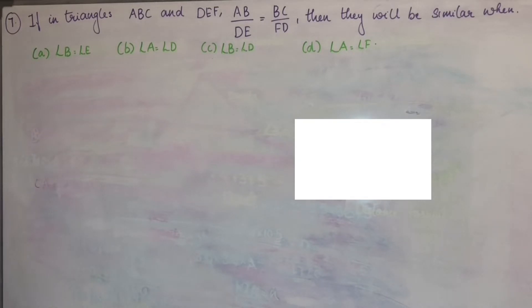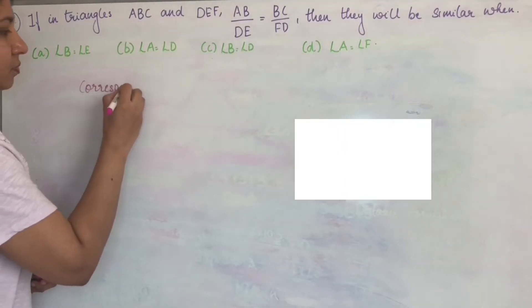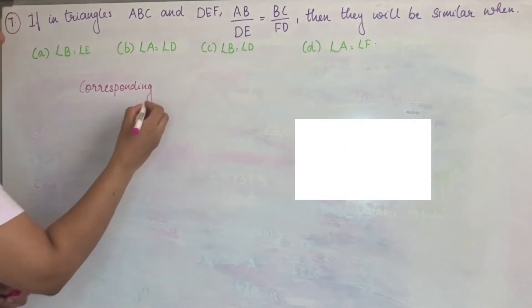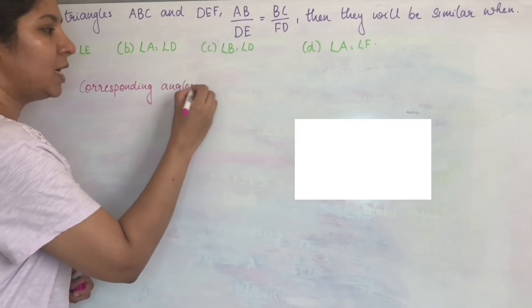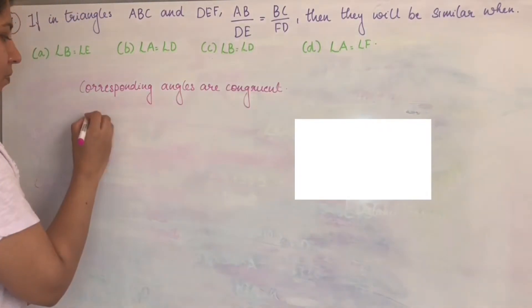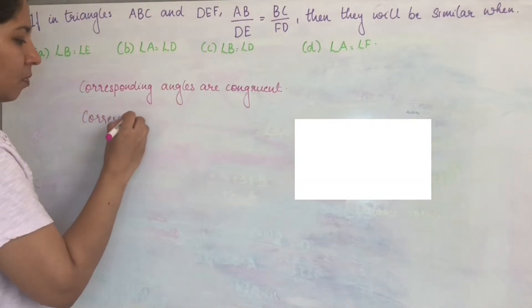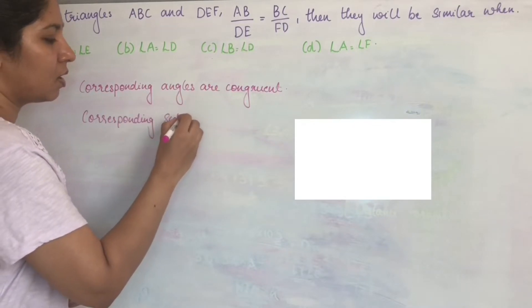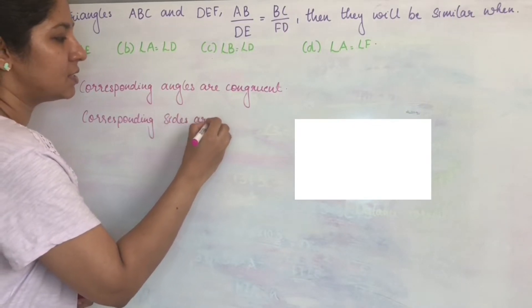Two triangles in similarity. When we can say that two triangles are similar? Two triangles are similar if their corresponding angles are congruent and their corresponding sides are in proportional.